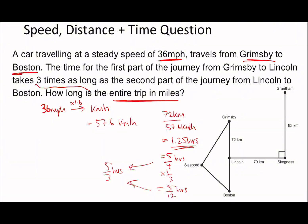We're traveling at 36 mph, so all we have to do is 5/3 times 36, which gives 60 miles in total.